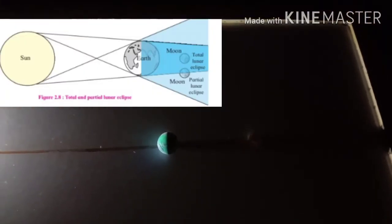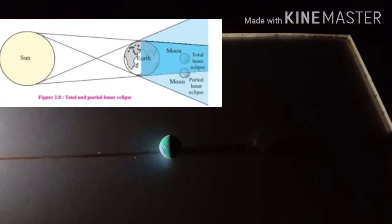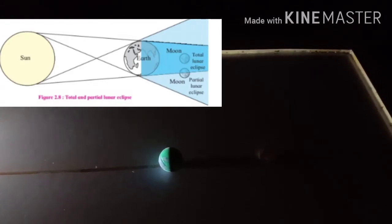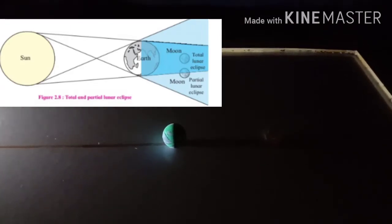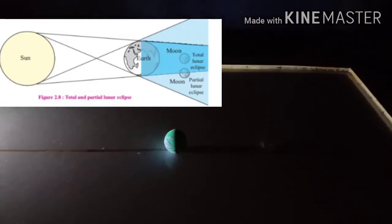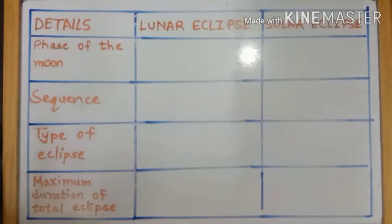And if only a part of the moon is in the shadow, we see a partial lunar eclipse. Now let's see the characteristics of lunar eclipse and solar eclipse.